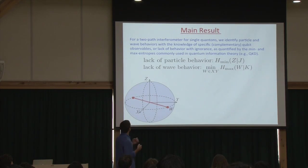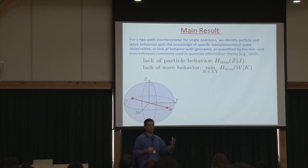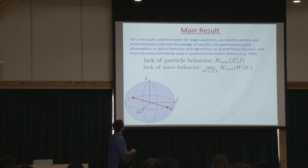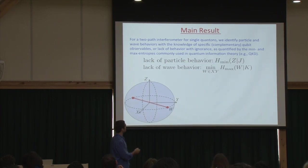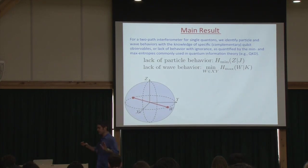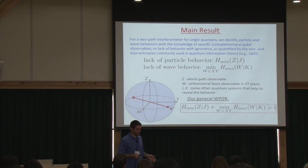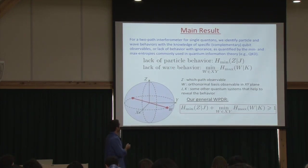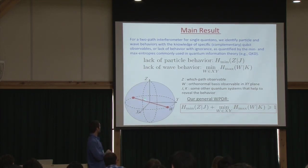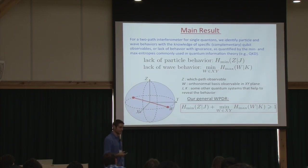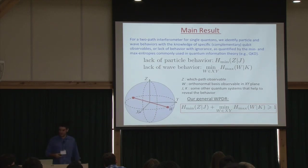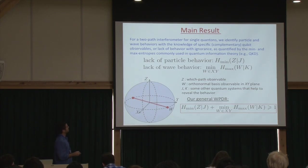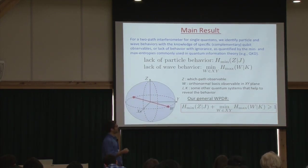Our main result is the following. For a two-path interferometer for a single particle (a single quanton), we identify particle behavior and wave behavior with the availability of certain information about qubit observables — orthogonal axes on the Bloch sphere. Particle behavior is identified with the min-entropy of the z observable given access to some other quantum system J, which could be a which-way detector. Lack of wave behavior is identified with the max-entropy of W given K, where W is some axis in the xy-plane of the Bloch sphere and K is an arbitrary quantum system that might help in predicting the wave behavior. Our general result is that the lack of particle behavior plus the lack of wave behavior is lower bounded by one bit of information.